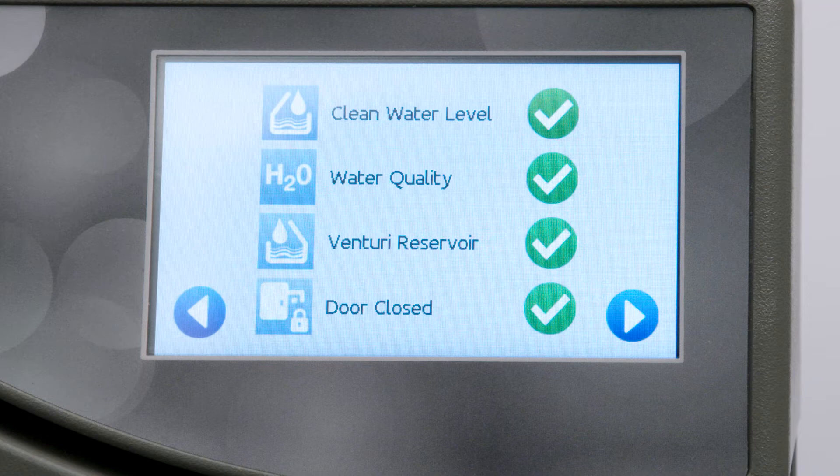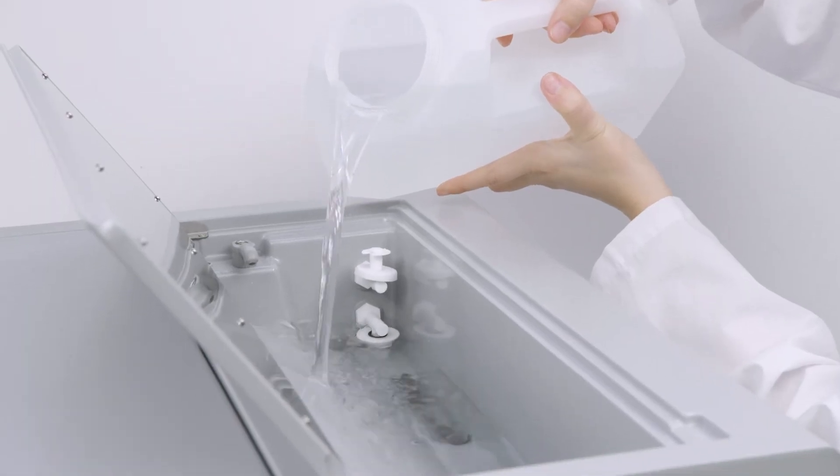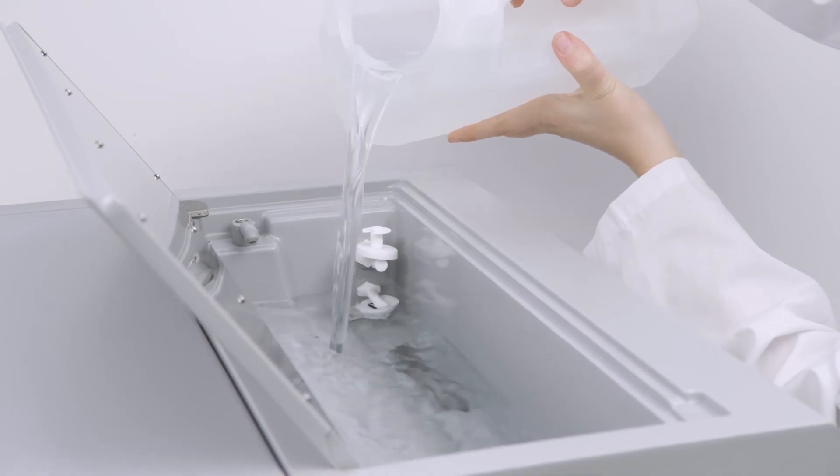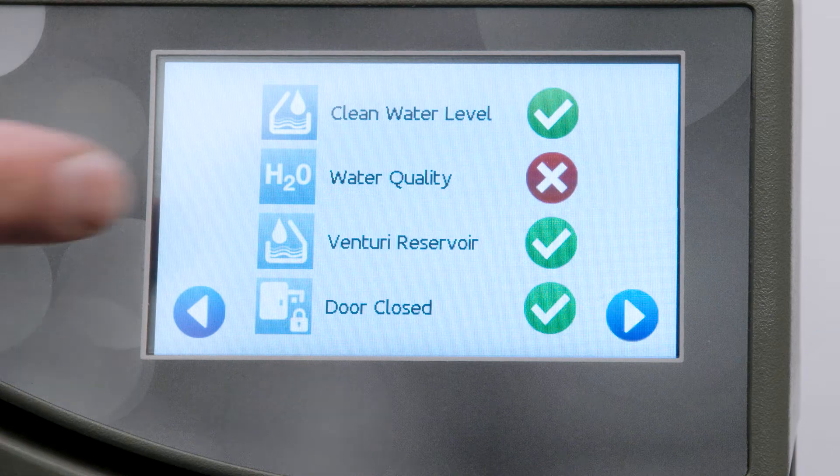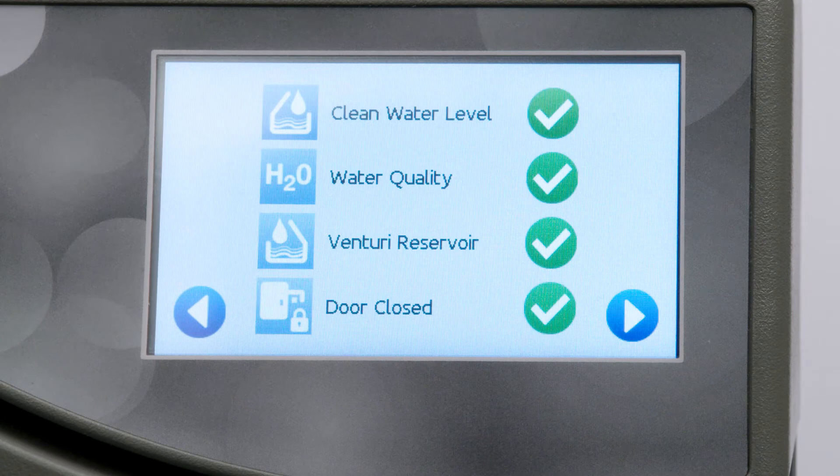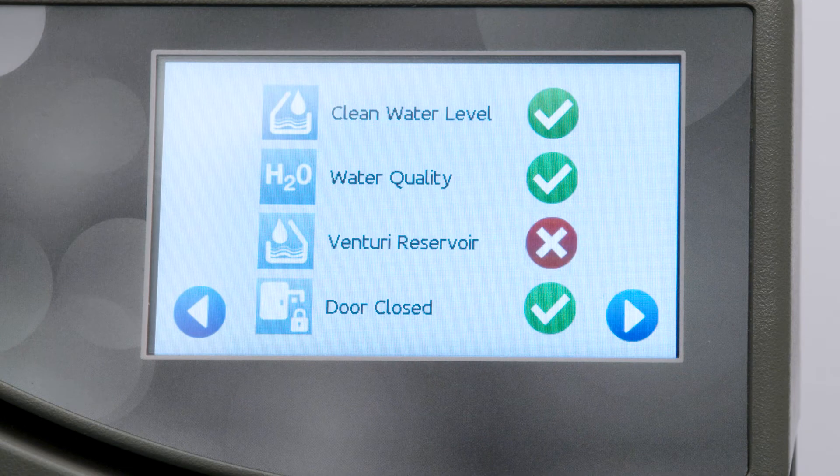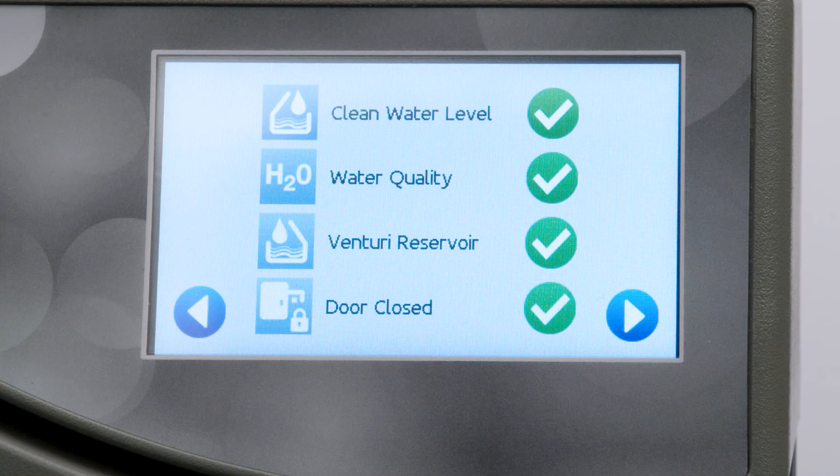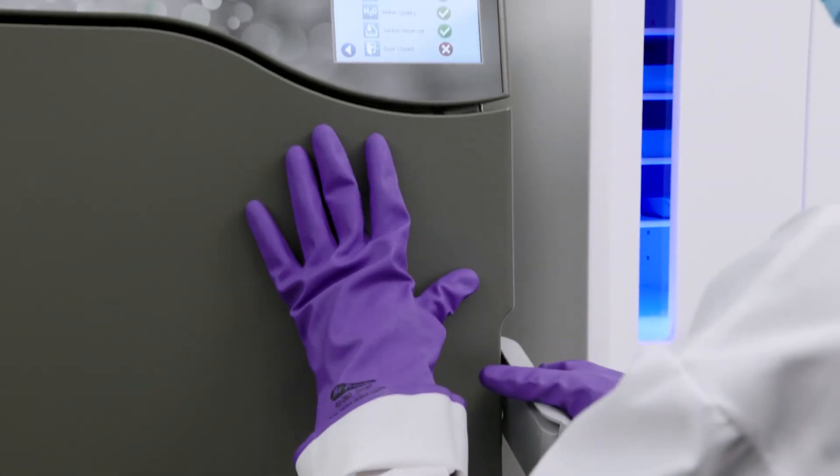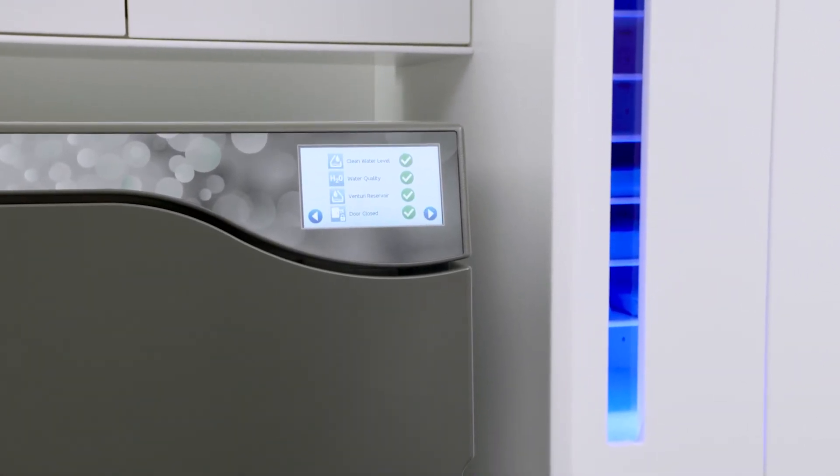The four conditions it monitors are clean water level. A red X will indicate that the clean water level is too low to run a cycle. The clean water check will turn yellow when the minimum water level is reached and green when it is at the maximum. Add steam distilled water to the clean water reservoir to correct this condition. Water Quality: A red X will indicate that there is a water quality problem in the clean water reservoir. Press the icon to view details. Venturi Reservoir: A red X will indicate that the Venturi water level is too low to run a cycle. Add steam distilled water to the Venturi water reservoir to correct this condition. Door Status: A red X will indicate the door is not correctly closed or locked. Check for instruments jamming the door. Once you have corrected the issue, press the forward arrow to continue to the start screen.